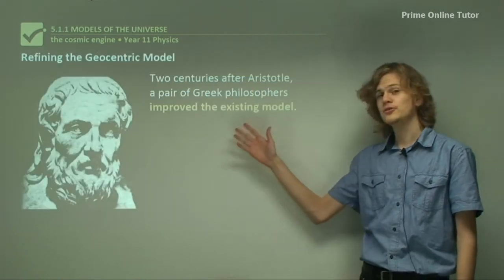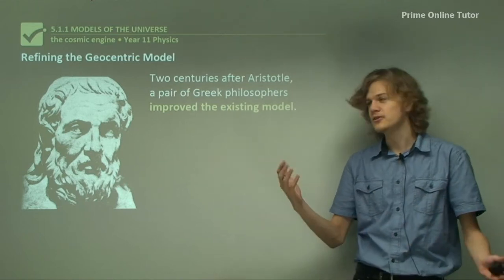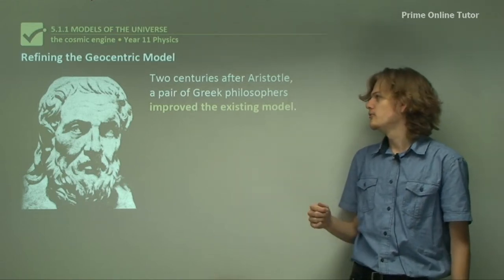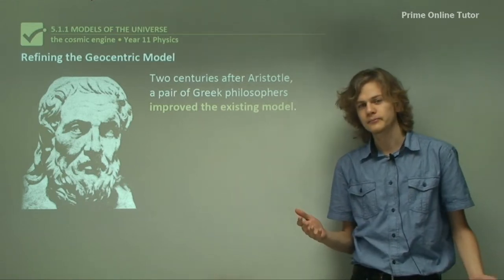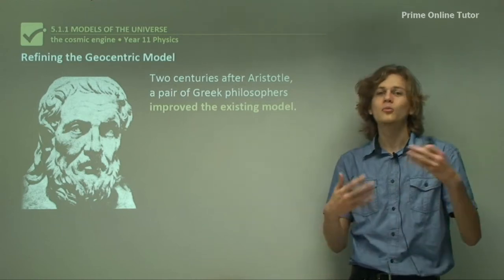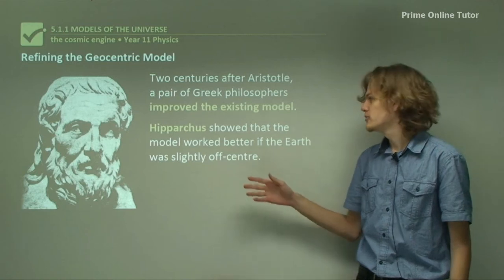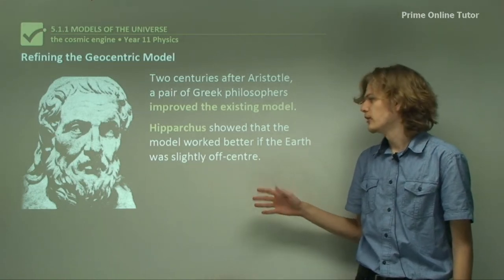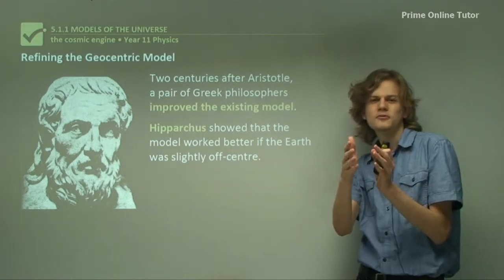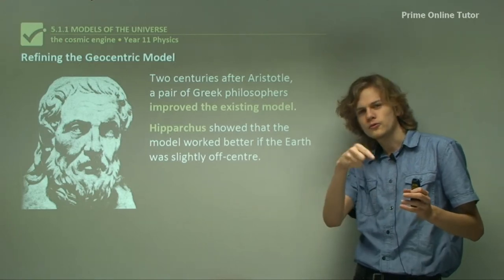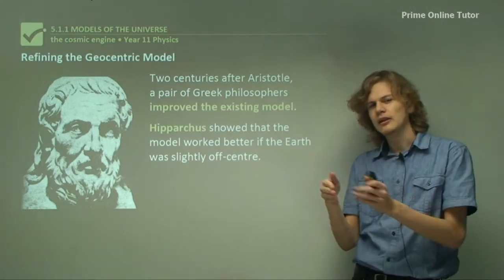Two centuries after Aristotle, in around 100 BC, a pair of Greek philosophers improved the existing model. They found some flaws with it and ways to improve it. Hipparchus showed that the model works better if the Earth was put just slightly off-center. So the Earth was spinning around a little empty point in space.